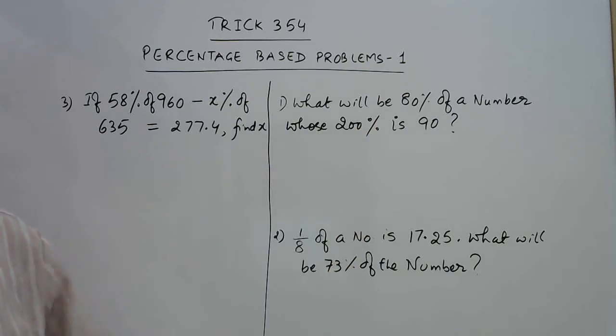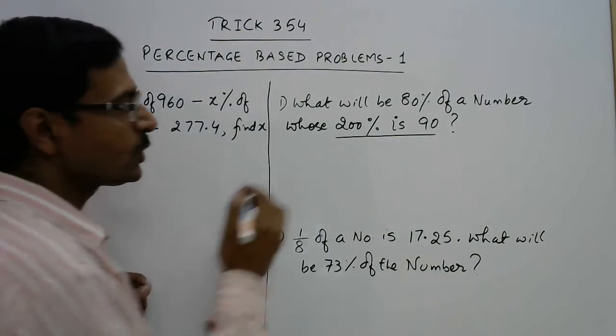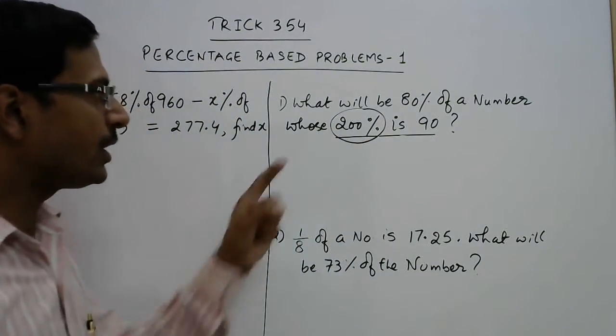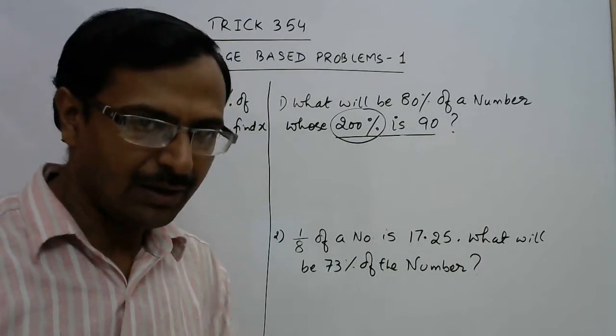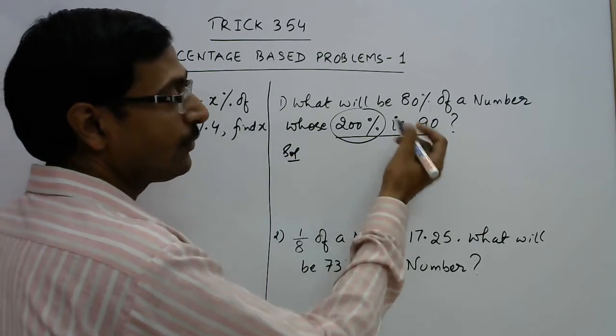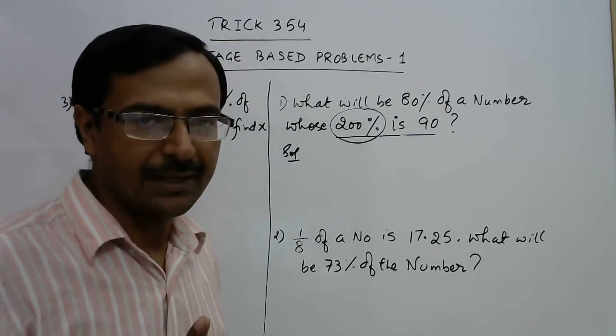200% is 90. What does 200% mean? 200% means double. So if the double is 90, then the number is 45. So that has to be done only in mind.